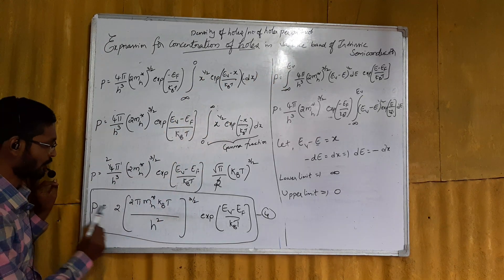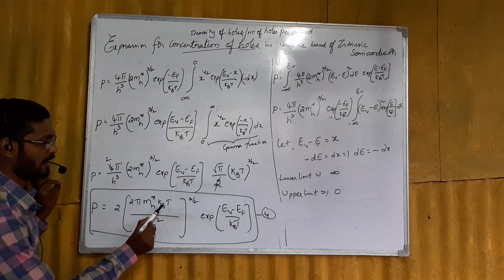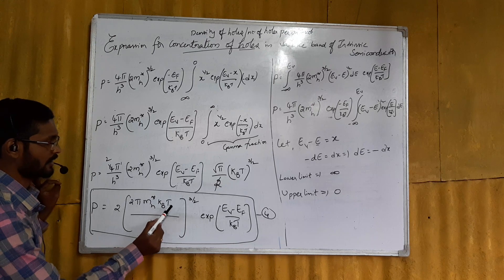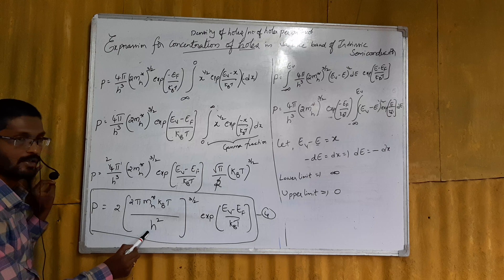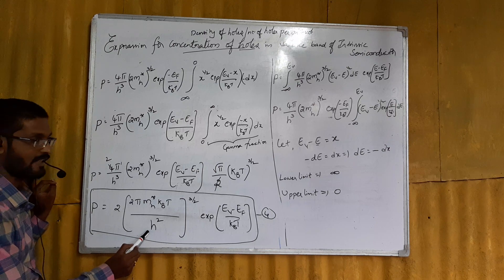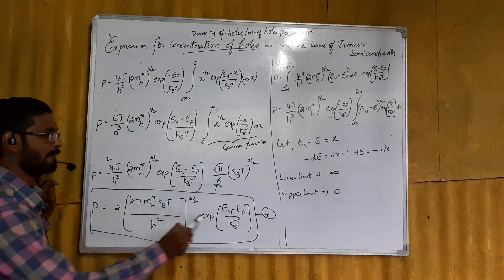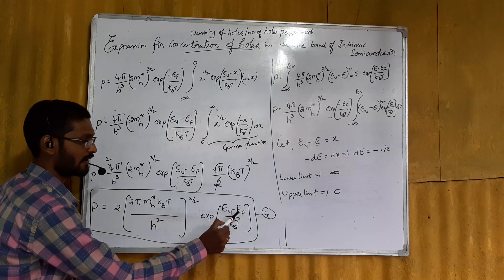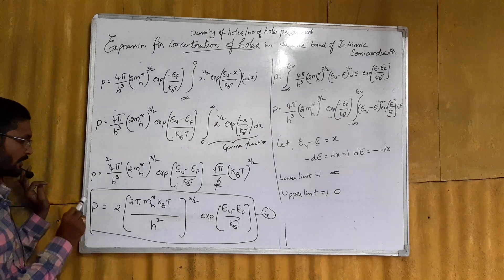In this expression, mh* is the effective mass of the hole, kB is Boltzmann's constant, T is the absolute temperature, h is Planck's constant, Ev is the topmost energy level of the valence band, and Ef is the Fermi energy level.